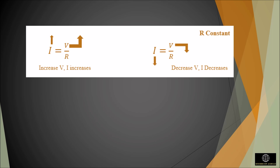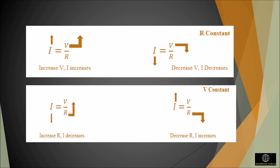The amount of current in the circuit is inversely proportional to its resistance when the voltage remains unchanged. For a constant voltage value, if the resistance in the circuit is increased, the current will decrease, and if the resistance is decreased, the current will increase. For example, if the resistance is increased by three times, the current will decrease to one third of its value when the voltage remains constant.